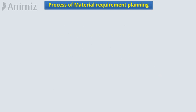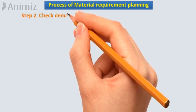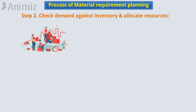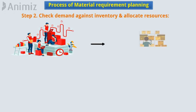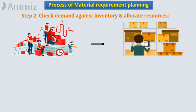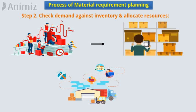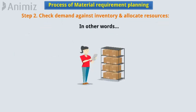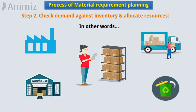Step 2: Check demand against inventory and allocate resources. This step involves checking demand against what you already have in inventory. Then MRP distributes resources accordingly — the MRP allocates inventory into the exact areas it is called for.